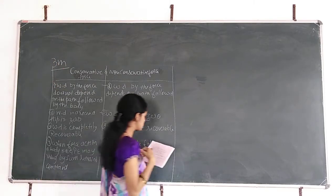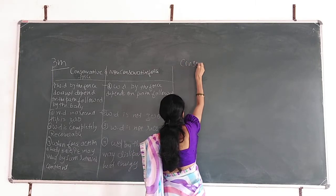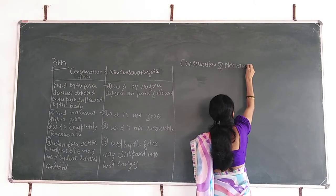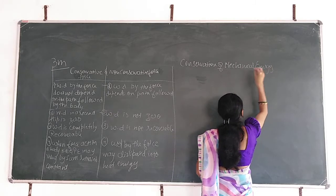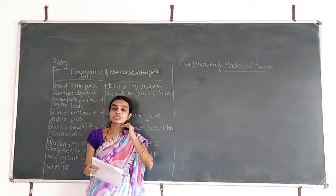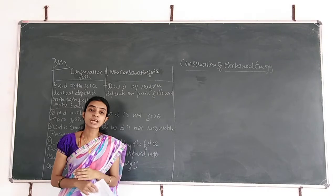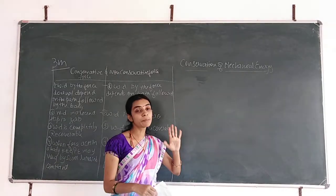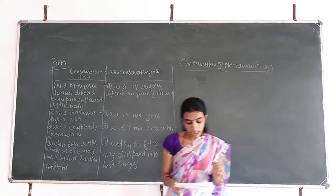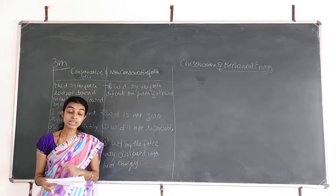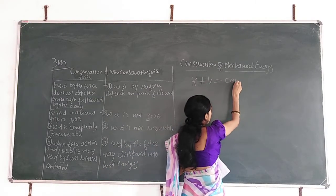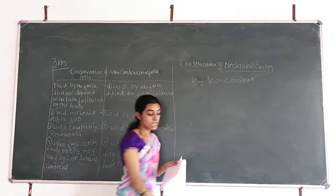The next important concept is the conservation of mechanical energy. The law of conservation of energy states that energy can be neither created nor destroyed, but it can be transformed from one form to another. The sum of kinetic energy and potential energy gives the total mechanical energy, and that value always remains constant. In case of a conservative system, kinetic energy plus potential energy is constant.